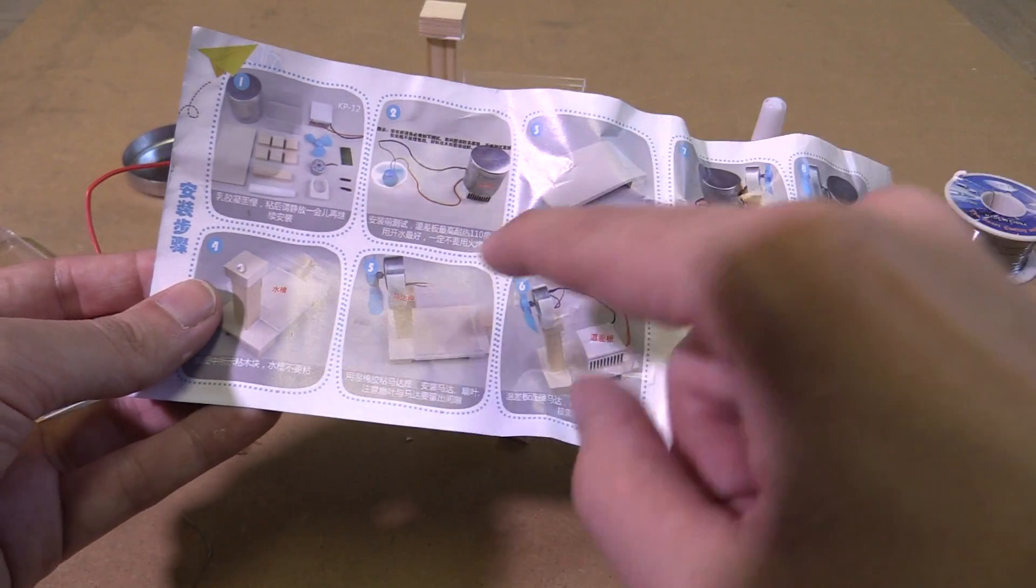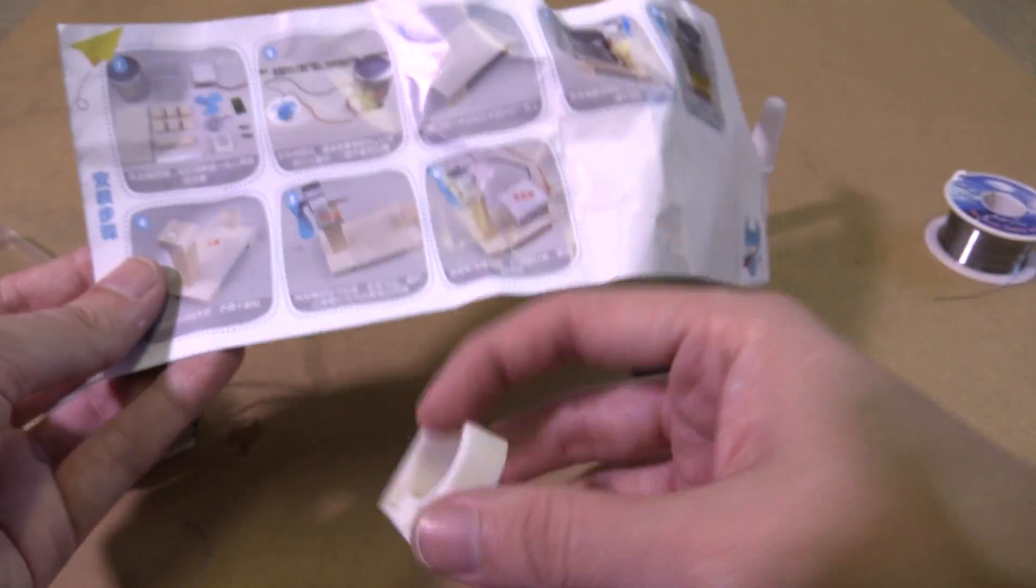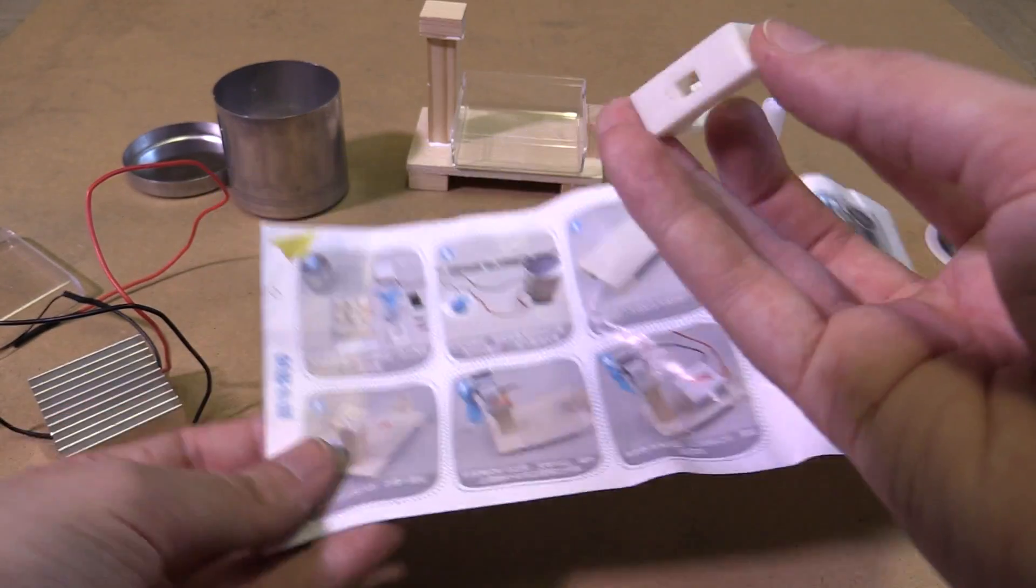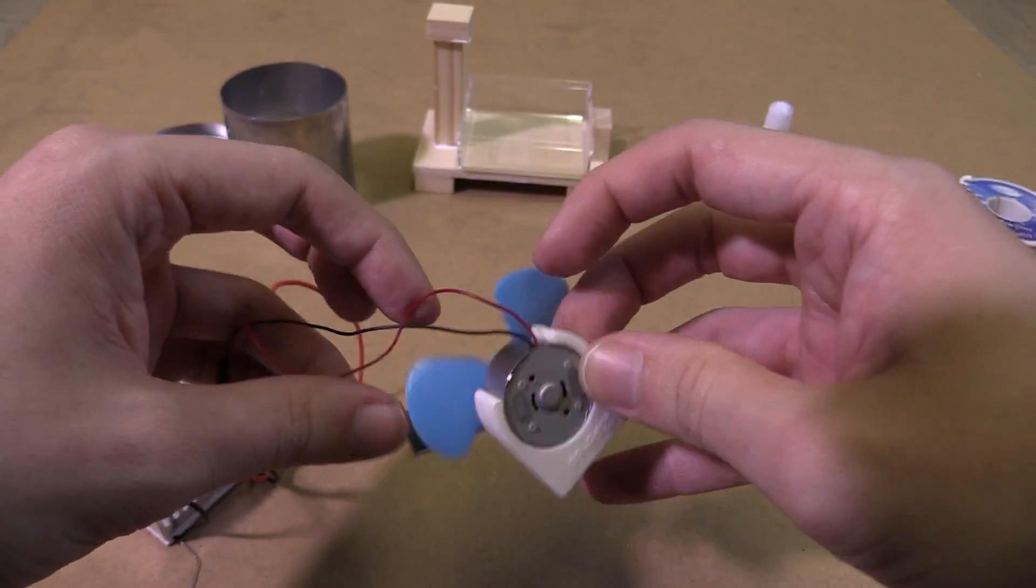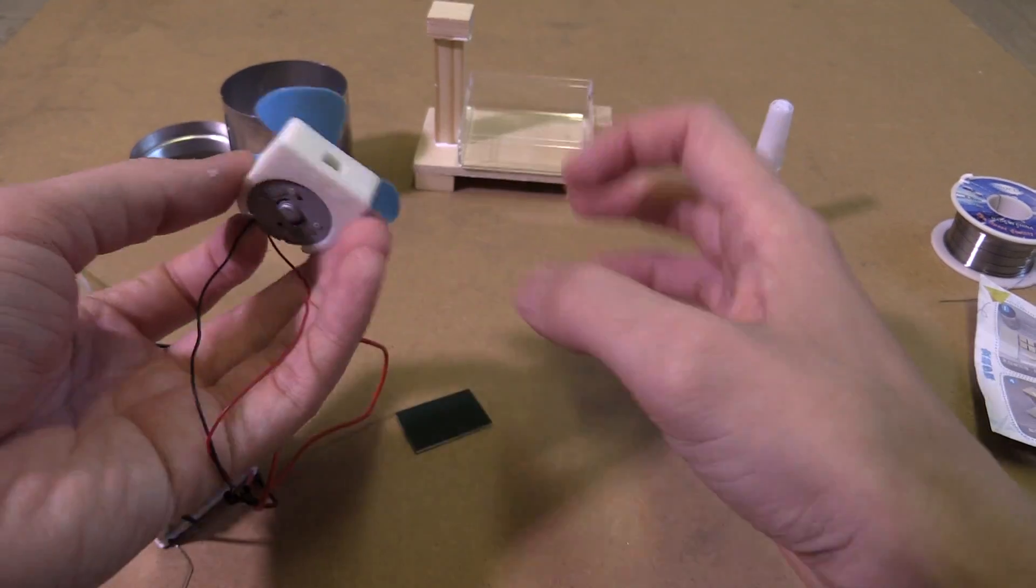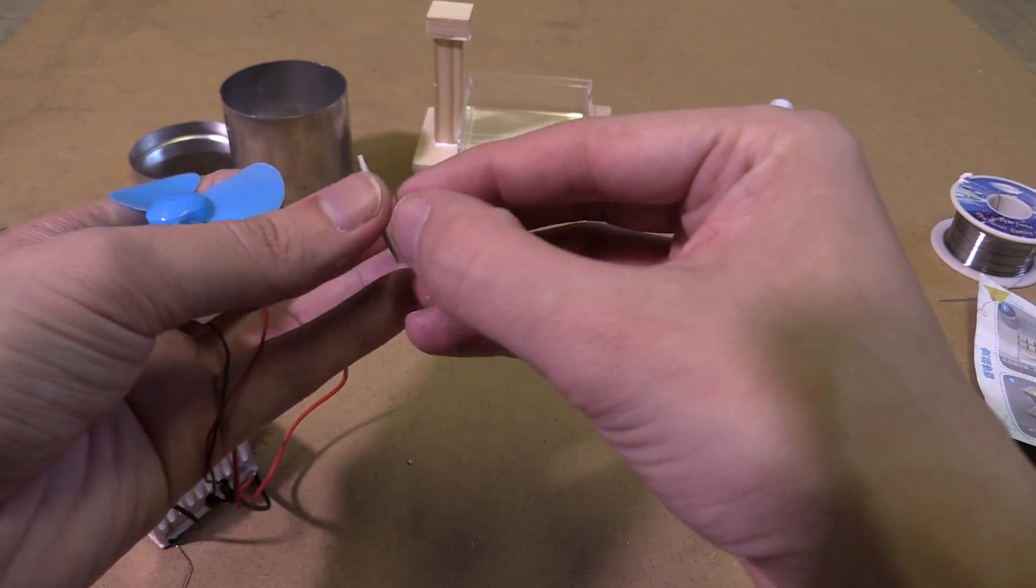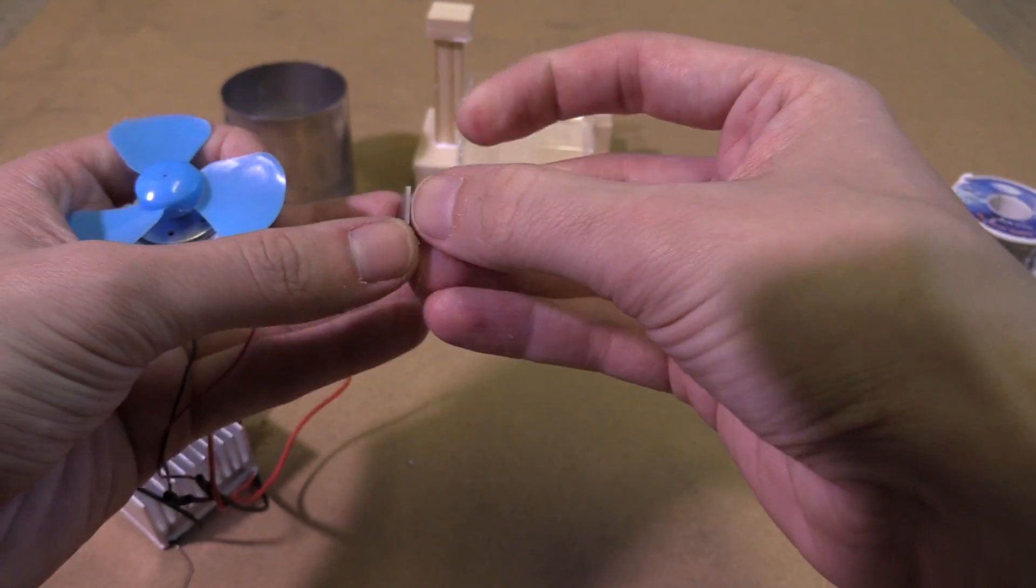And then the instructions show the next part is to put the motor inside this little holder which will then go on top of here. Now I assume that's what this sticky pad is for, to stick that in place. It's a tight fit but it went on there. So let's use this double-sided tape to connect it to the top of the podium.